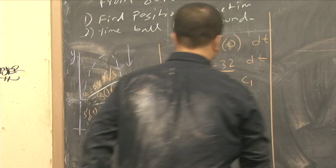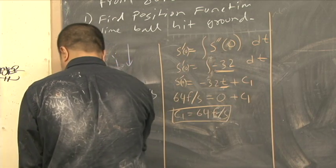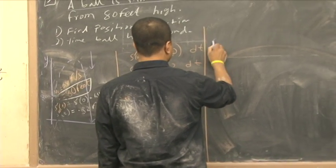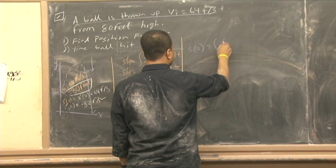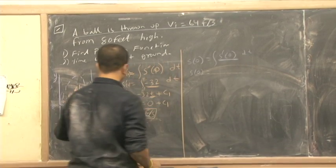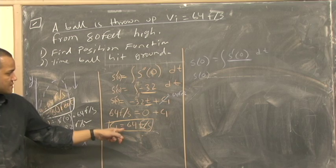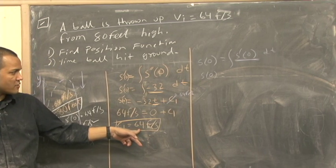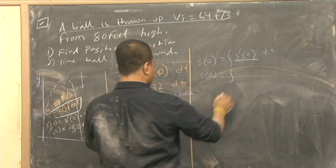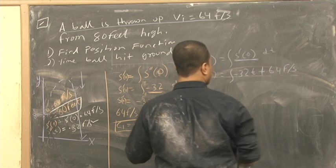Now, we're going to continue until we solve this problem. This problem is worth solving because it combines the essence of physics and essence of calculus and everything in between. C1 is 64 feet per second, so S prime is negative 32t plus 64.